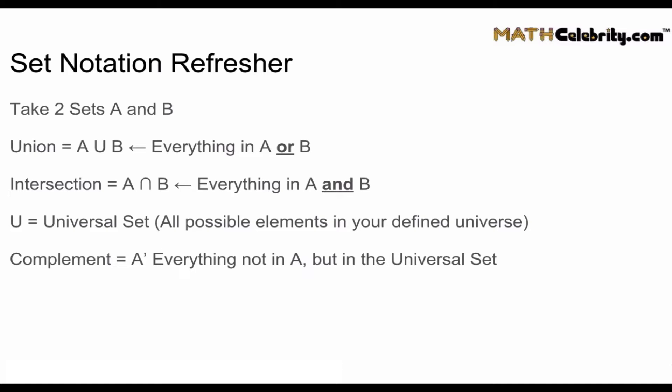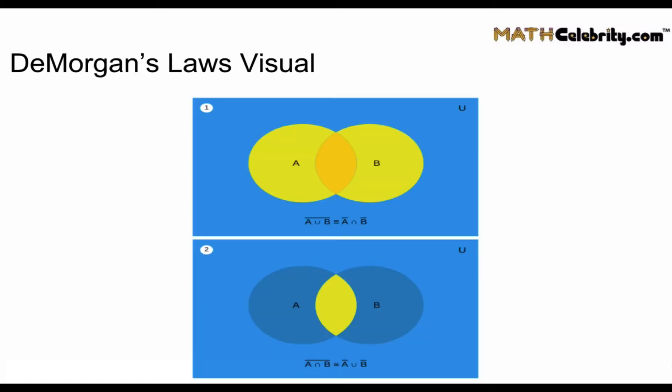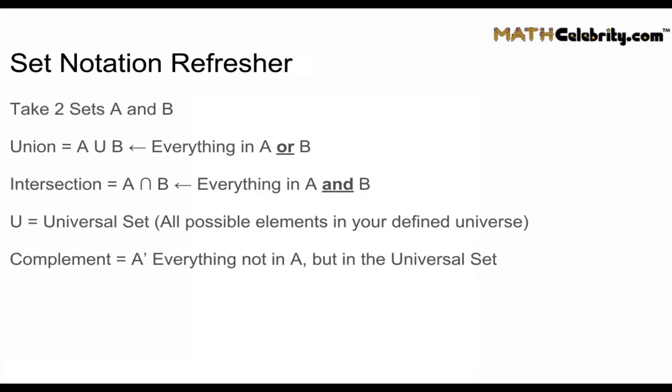The distinguishing words are 'or' for union and 'and' for intersection. The universal set U is all possible elements in your defined universe — on the prior Venn diagram, that's the entire blue section. Finally, the complement of a set, written as A' or A with a superscript C, is everything not in set A but within the universal set.